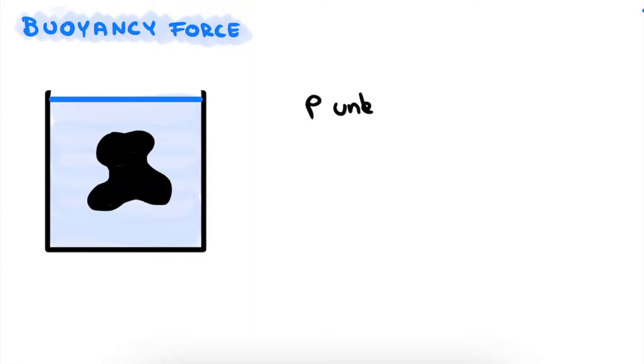Consider a container filled with a fluid. You can take water, but it can be any other fluid you like. In it we insert an object of arbitrary form and for now the material, and thus its density, is still unknown. So intuitively we don't know whether it will go to the surface and float or sink to the bottom.